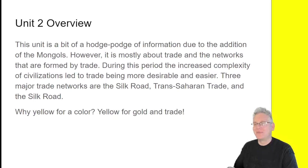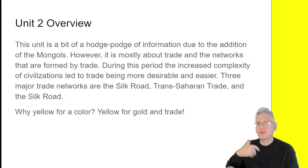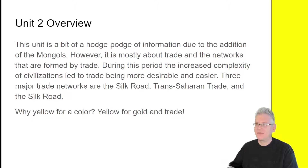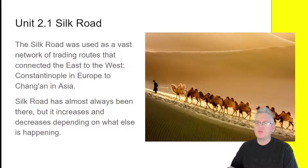So why are we doing yellow for Unit 2? Yellow for gold and trade. I could have done an actual gold color, but that seems gaudy. I like the primaries, so we're keeping it there. You'll see this yellow throughout Unit 2. Now let's talk about the Silk Road, ladies and gentlemen. You've probably heard about this before.